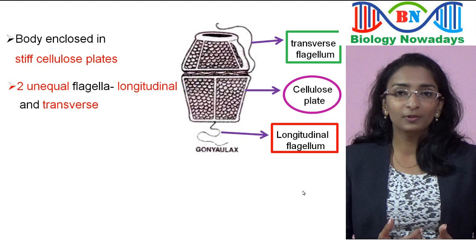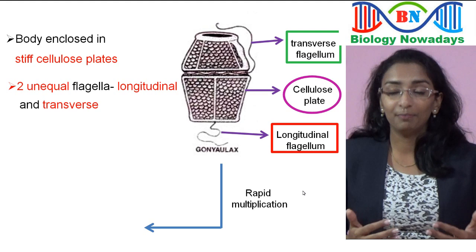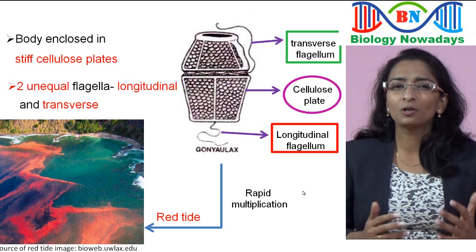Sometimes red dinoflagellates undergo rapid multiplication and cause blooms, which make the sea appear red — this is called red tide. They are harmful because they produce toxins which kill the animals in the sea, including fishes.